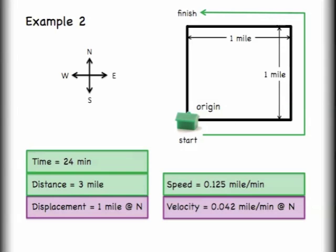If we look at my vector quantity, my displacement says that I am now one mile to the north and that means that if I use my equation for velocity, which is displacement divided by time, I get this number that the velocity is equal to 0.042 miles per minute, also to the north.